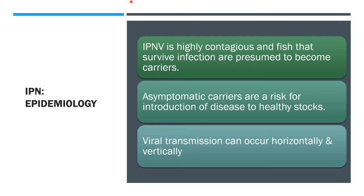For horizontal transmission, the virus enters the fish through the gills or the gastrointestinal tract. For vertical transmission, the virus is transmitted by the eggs of infected carrier broodstock.